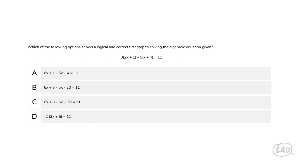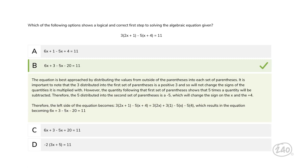Which of the following options shows a logical and correct first step to solving the algebraic equation given? Even though this is algebra, we still need to remember PEMDAS from earlier, so we start with the parentheses. If we distribute the 3 and the negative 5 to their respective parentheses, we'll get this choice: 6x plus 3 minus 5x minus 20 equals 11.